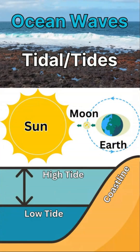Waves also form from tidal forces and gravitational forces from both the Moon and the Sun. The Earth is rotating, and as it rotates, the ocean water is attracted towards both the Moon and the Sun based on their location. This is called the tides.